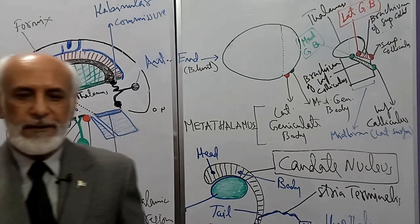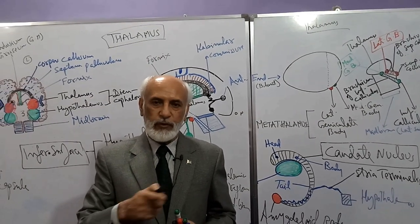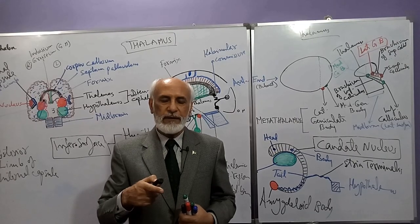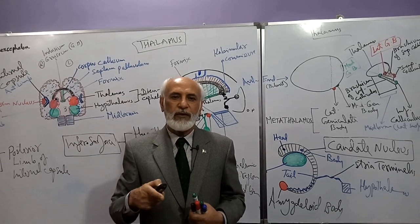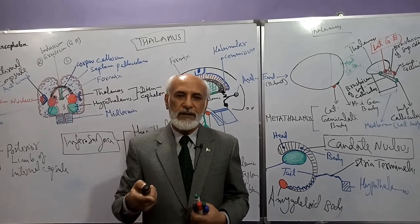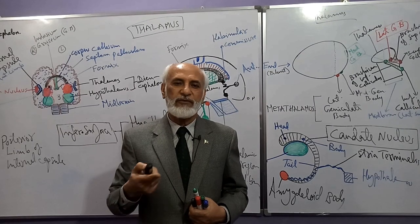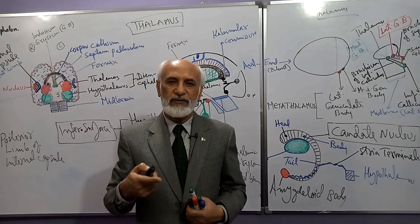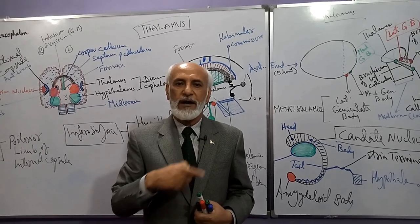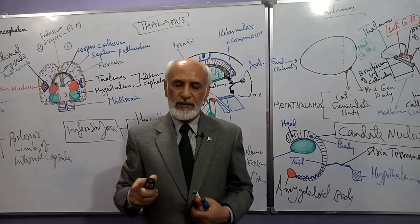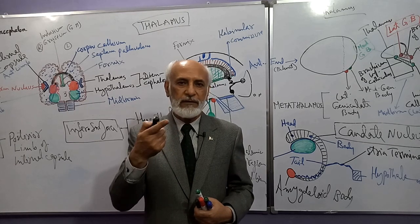So we finished with the epithalamus — discussing the habenular commissure, habenular nuclei, pineal body and its stalk, its clinical importance, and the posterior commissure. Then we discussed the thalamus: its external features and relations of its different surfaces. Below the pulvinar of the thalamus is the metathalamus — medial and lateral geniculate bodies. The next part of the diencephalon is the hypothalamus, which will be the topic of our next lecture. Thank you very much.